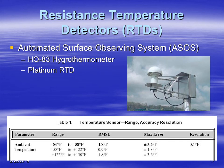Another very important use for RTDs — and this will more than likely be on the exam — is that it is the standard for ASOS machines, used in the hydrothermometer. It's a platinum resistance temperature device with a range of temperatures we normally expect here on Earth, and it's one of the more reliable instruments on an ASOS machine. That covers resistance thermometers and specifically RTDs. In future lectures, we'll talk about thermistors.